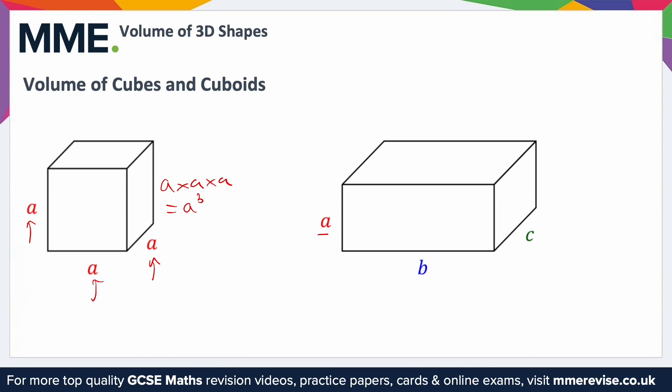So in this case, we've got A, B, and C. So we're going to do A times B times C, which we can't really simplify down too much, but we can just say A, B, C.